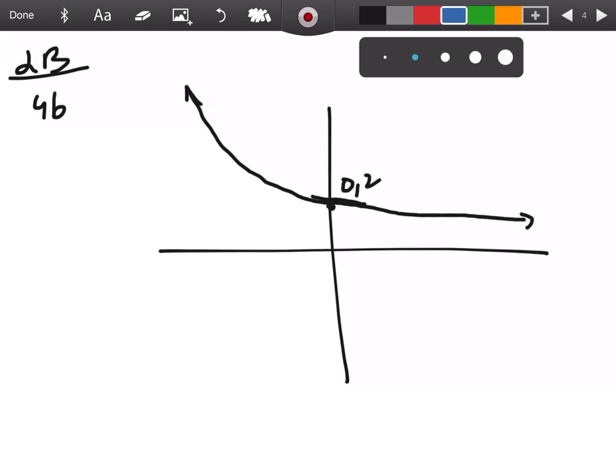They want us to find the inverse of that function. First of all, it passes the vertical line test. We test it to make sure it has a full inverse. It does.